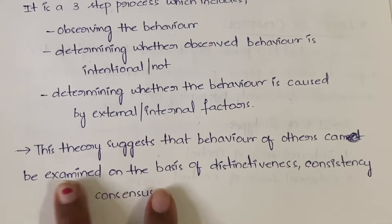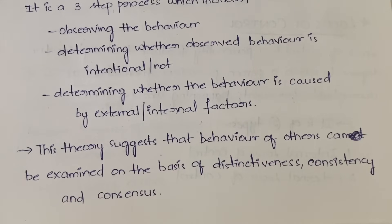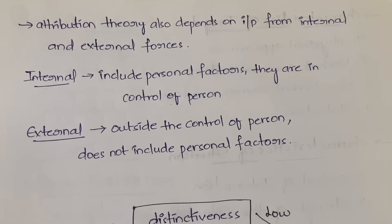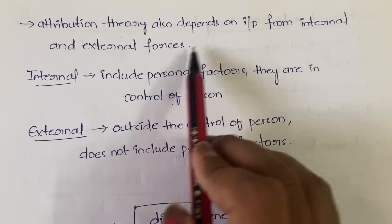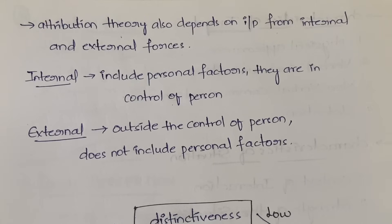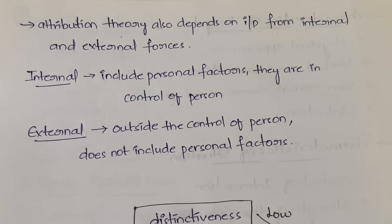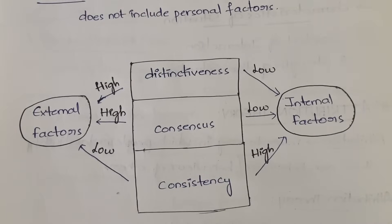Attribution theory suggests that the behavior of others can be examined on the basis of three things: distinctiveness, consistency, and consensus. Attribution theory also depends on input from internal and external factors. Internal factors are personal factors like our skill, intelligence, and memory power — things which are under our control. External factors are things which are not under our control.